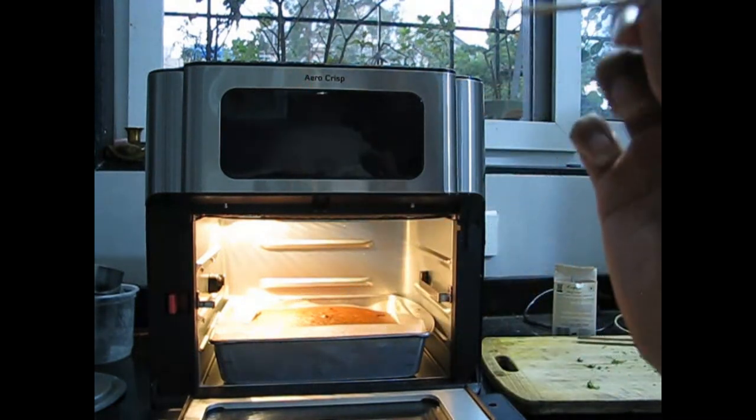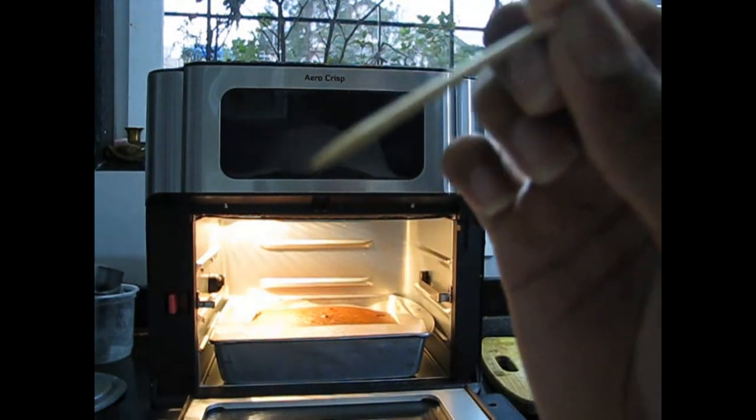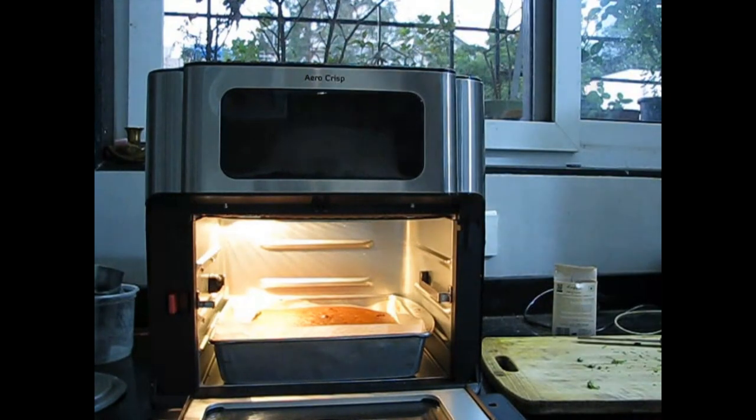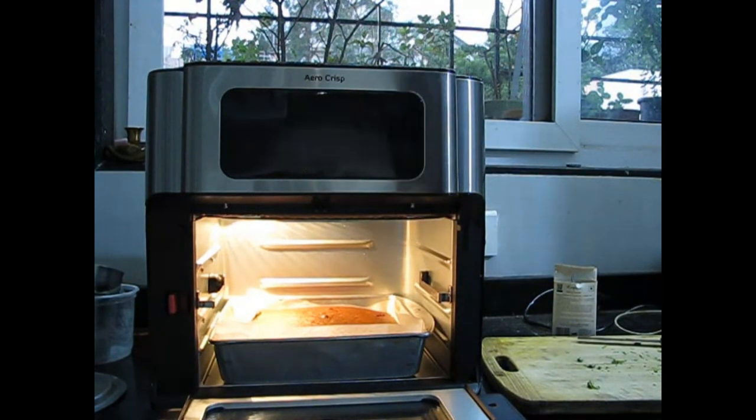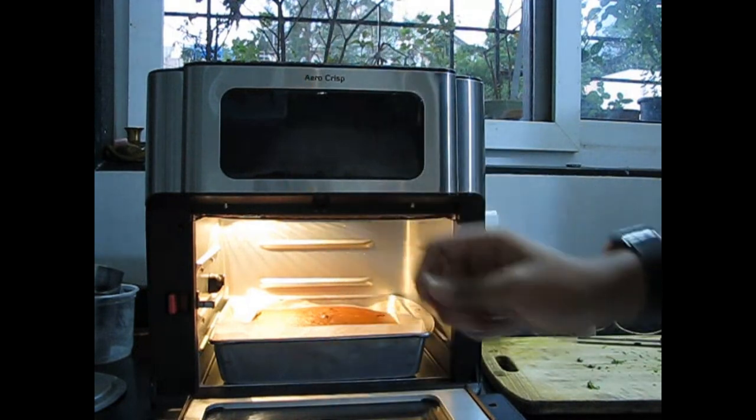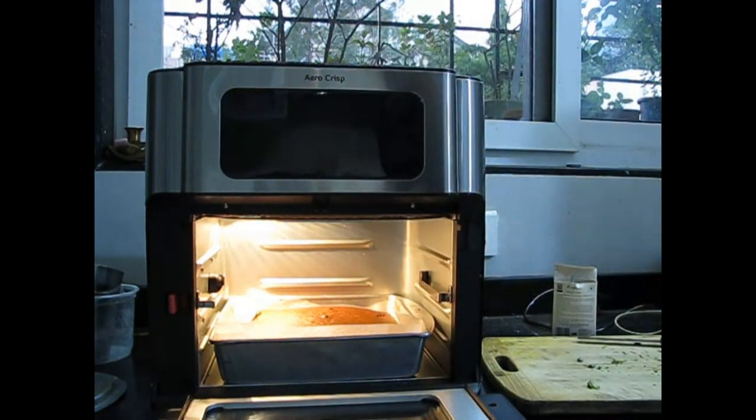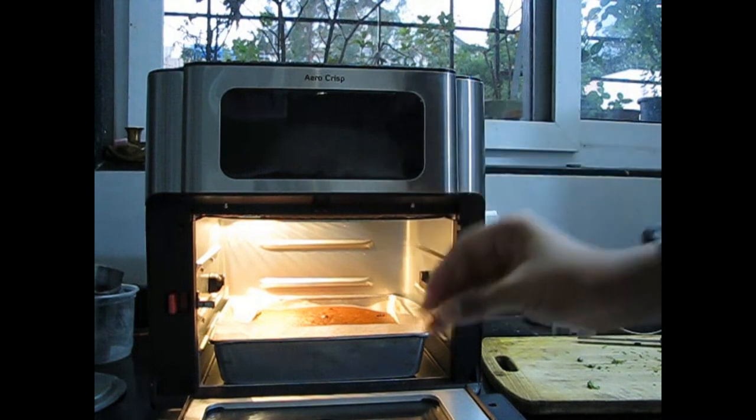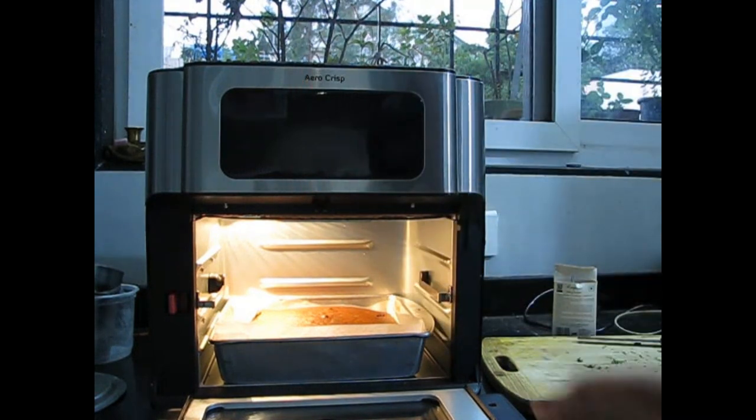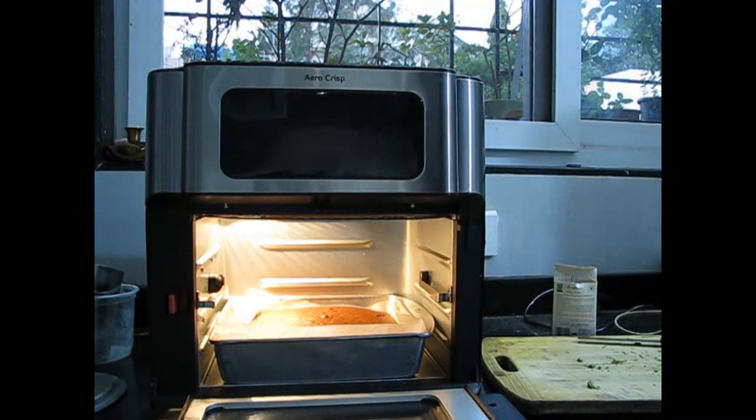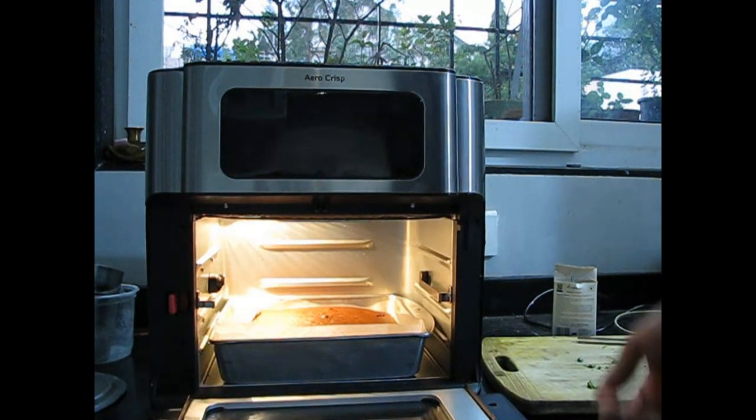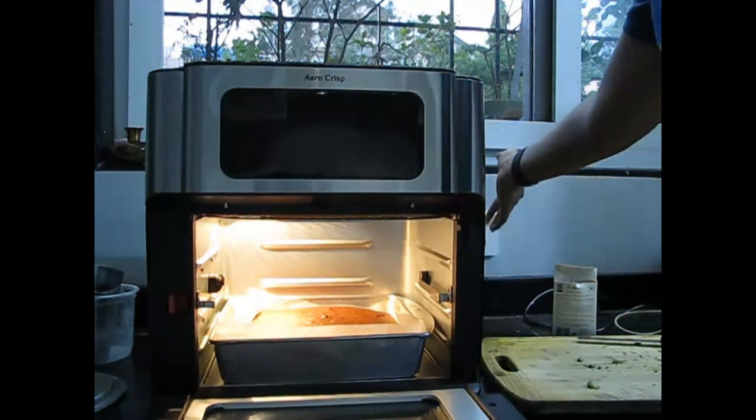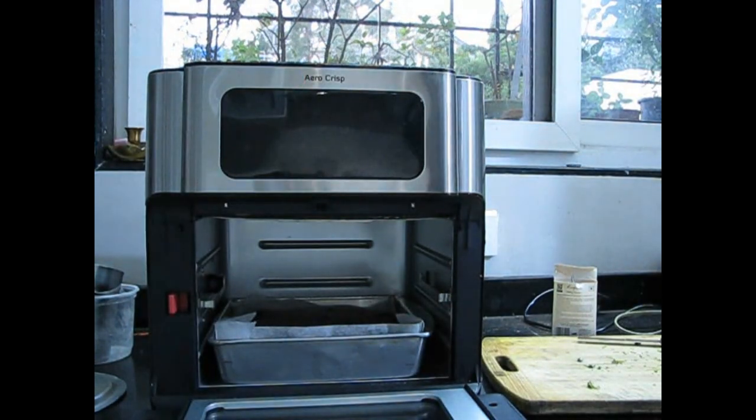You can see that this toothpick has come out completely clean, so this signifies that the cake is ready. Now just wait for half an hour to let it cool down. You can put powdered sugar on top to make it look good. Now we'll plate it. Now wait for half an hour for it to cool down, and we'll switch the oven off.